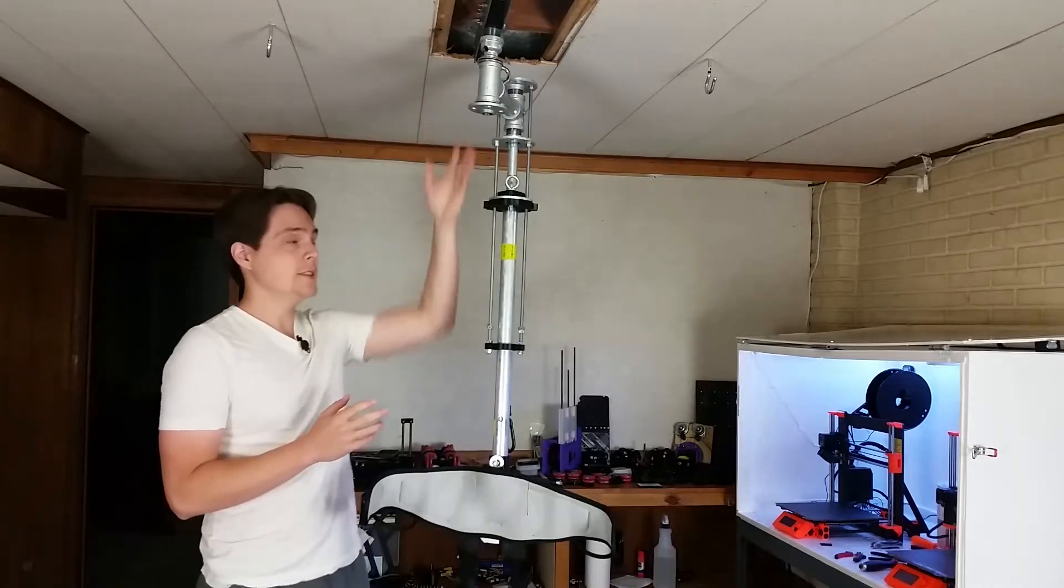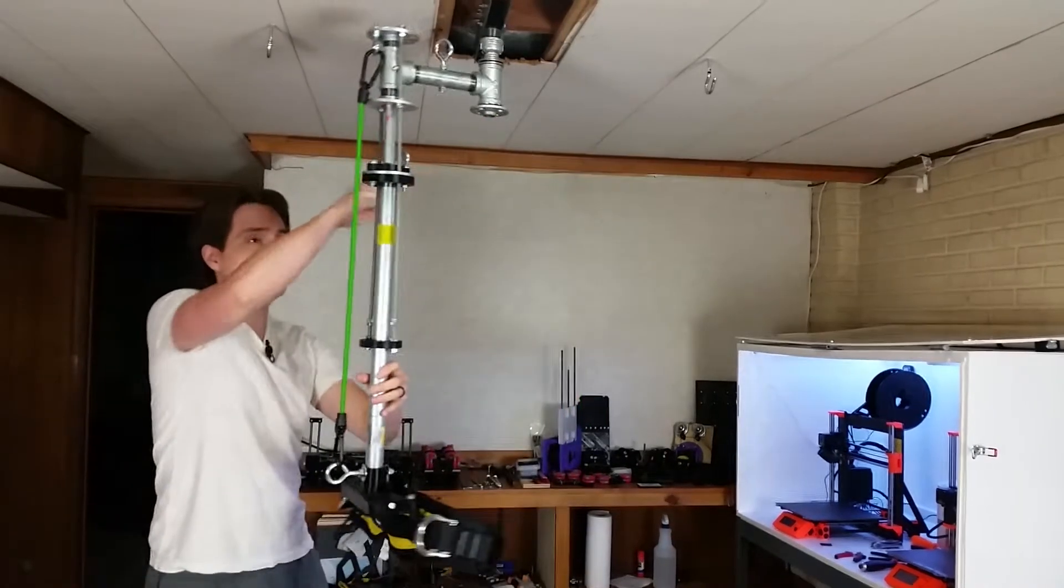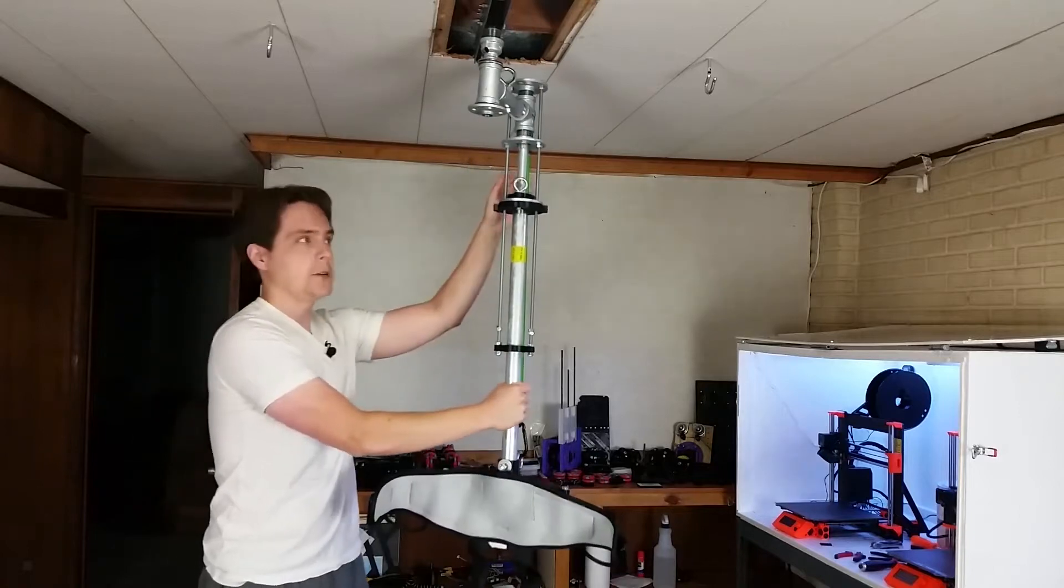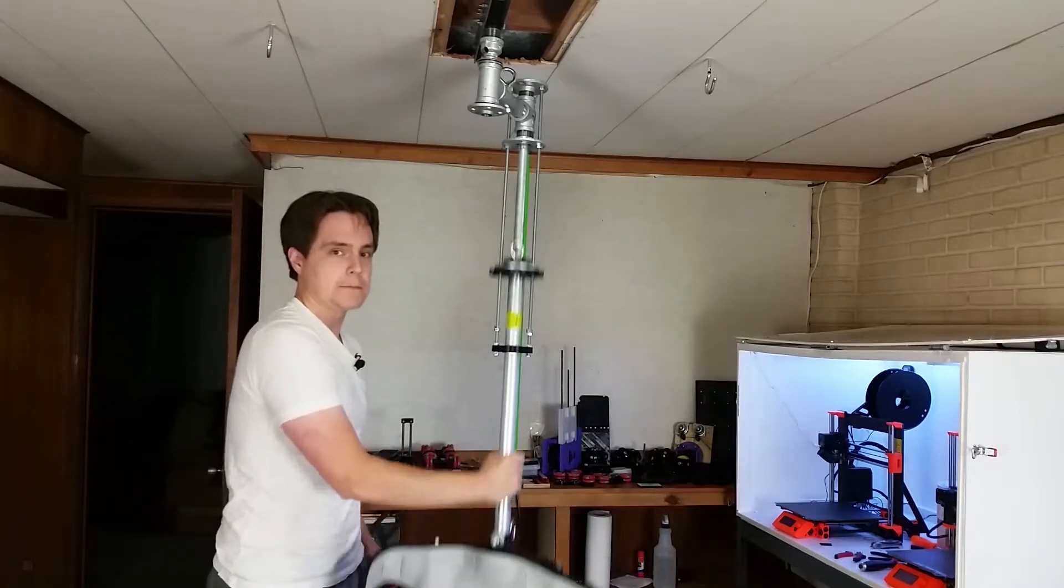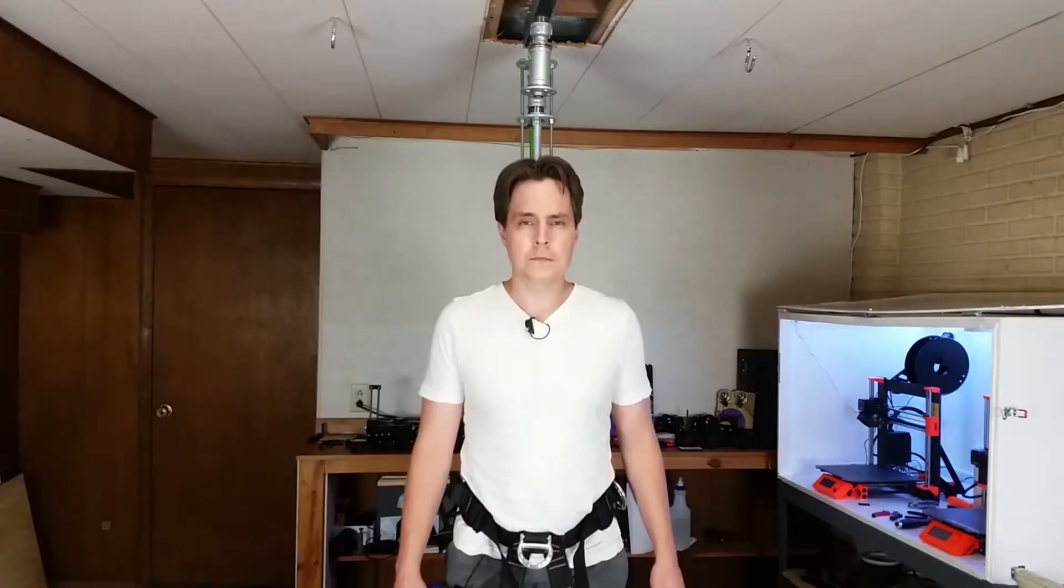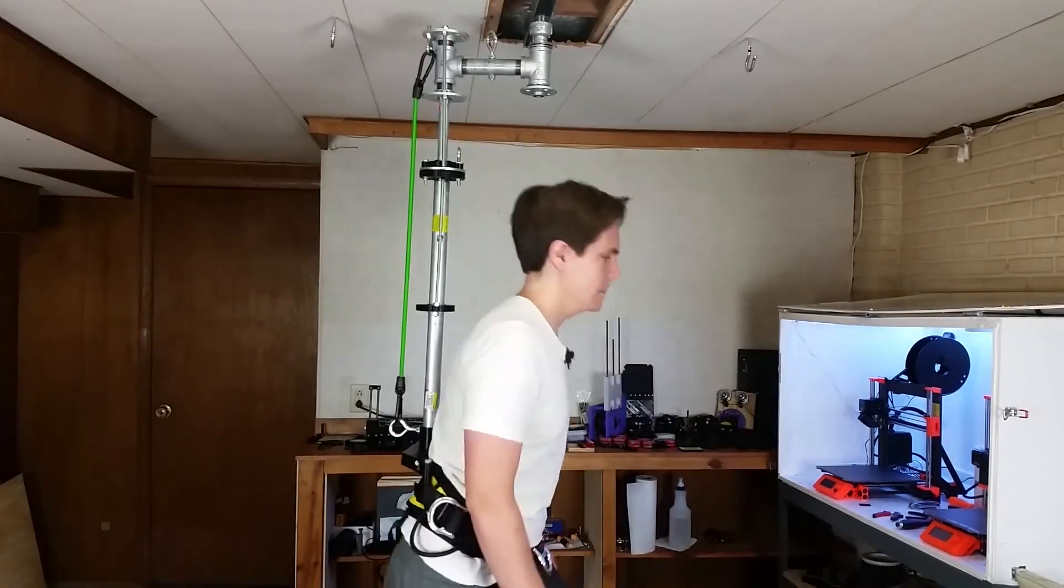This support rig is in an L shape and it swivels around the center point here, and it can go up and down like this for crouching. This support rig lets me turn in place really easily. It's really natural and I'm able to crouch.